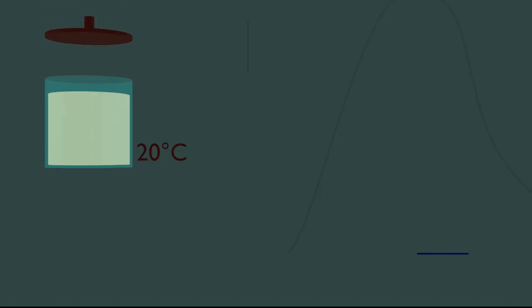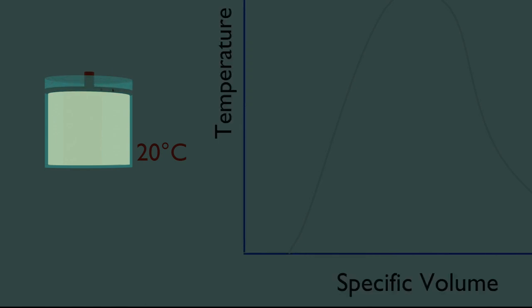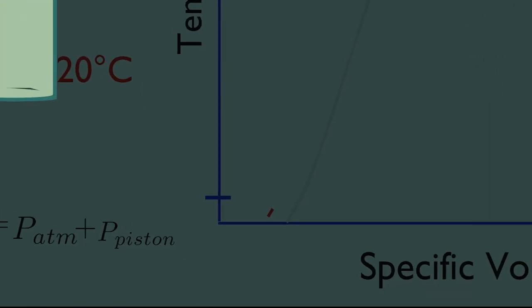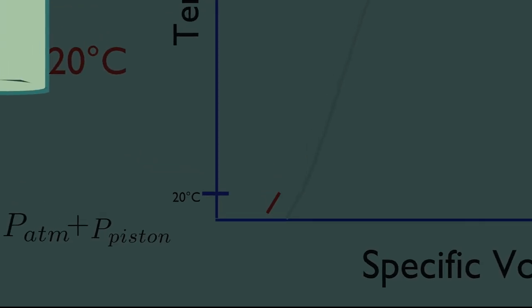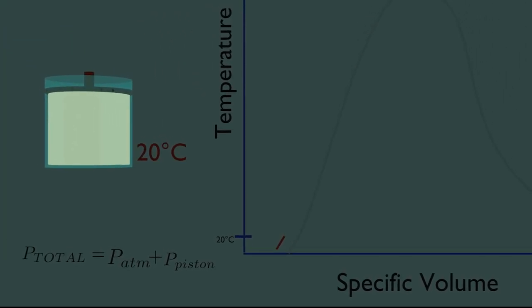Now let us heat water in piston cylinder assembly and see how the temperature and the specific volume varies at constant pressure. That is the total pressure created by atmosphere and the weight of piston which are always constant. Initially the water is at room temperature of 20 degrees celsius. At this time, water exists in the liquid phase, and it is called a compressed liquid, or a sub-cooled liquid, meaning that it is not about to vaporize.